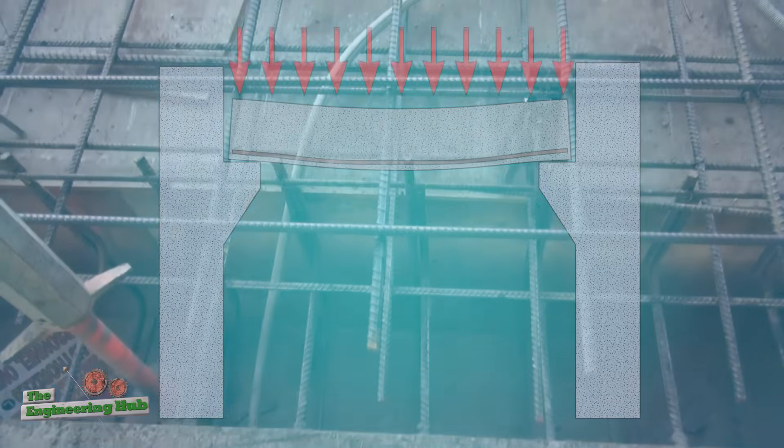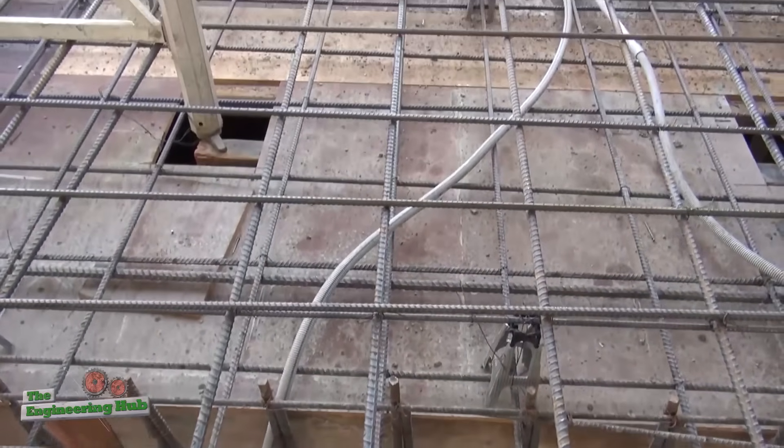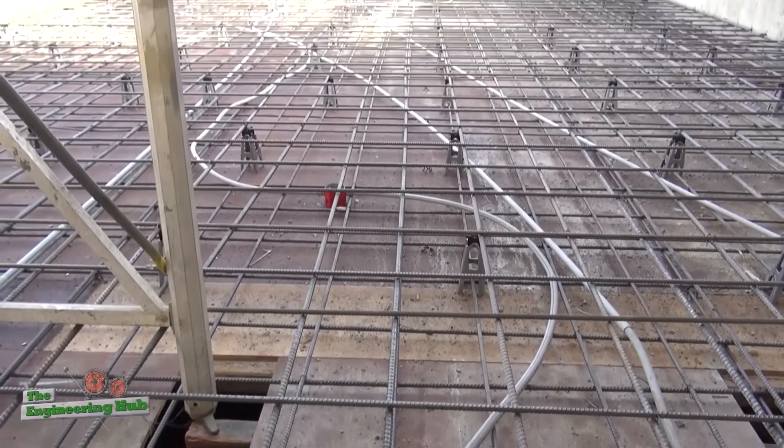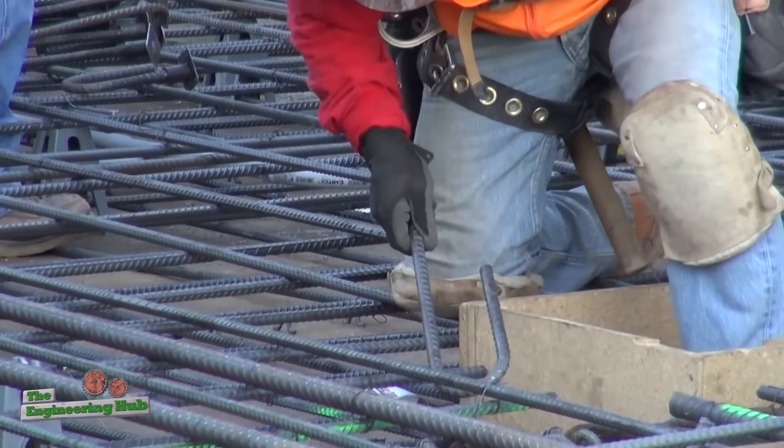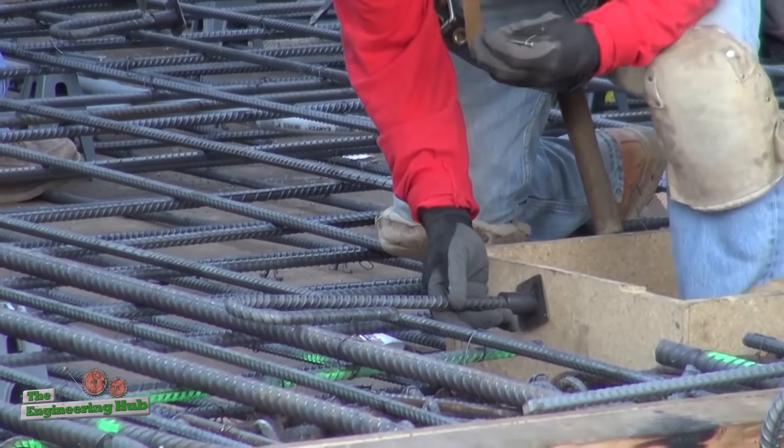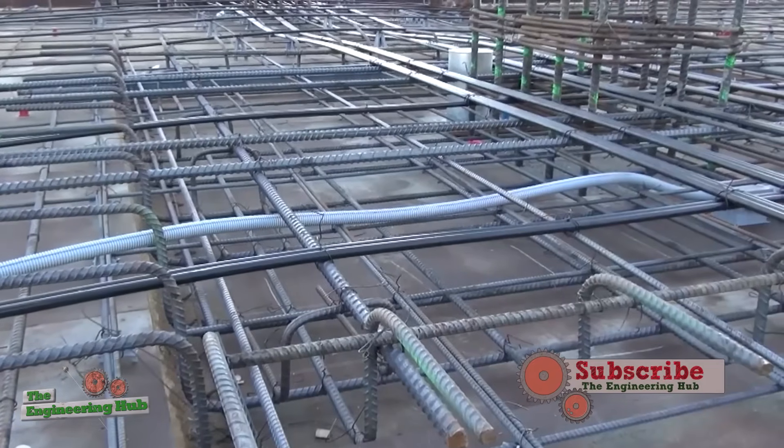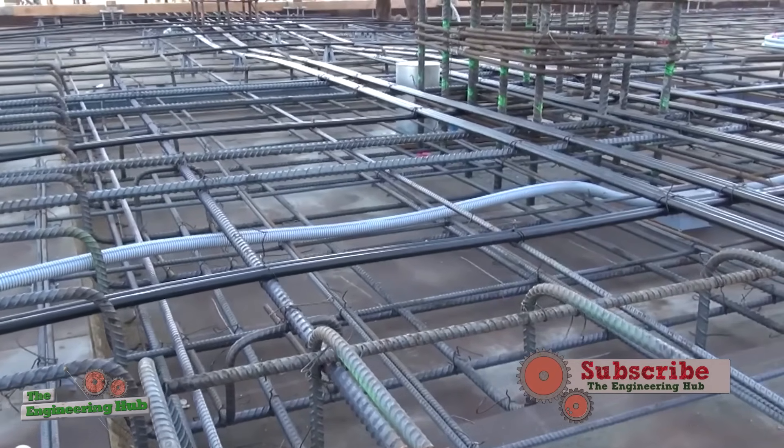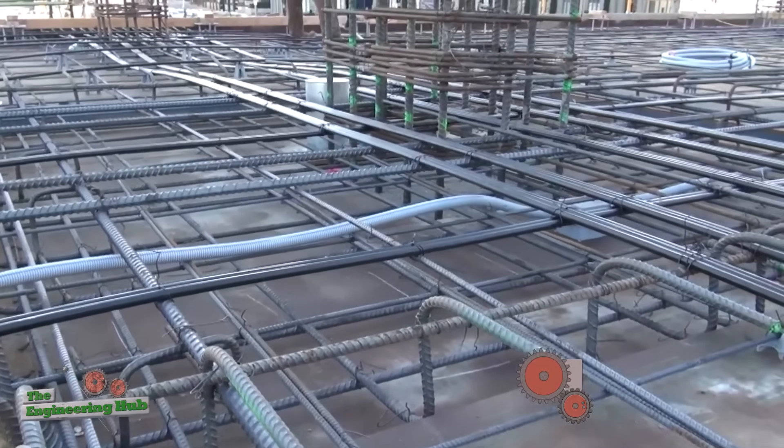This is where reinforcing steel comes in. Primary structural bars are generally placed in the tension zone, so when the concrete cracks, the reinforcing steel takes the tension load. There are other types of bars, such as for controlling thermal effects, but that's beyond the scope of this video.